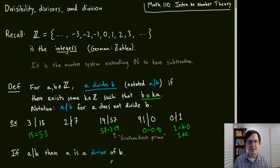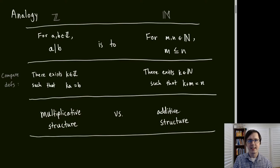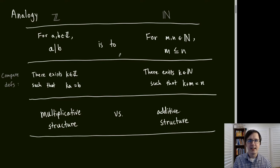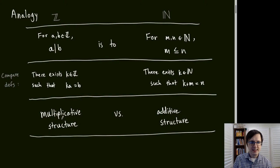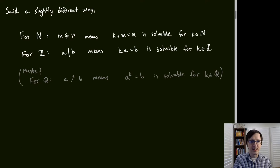Now let's look at an analogy between the integers and the natural numbers — specifically between divisibility and the less-than-or-equal-to relation. A divides B if there exists an integer K such that KA = B. For natural numbers, M ≤ N if there exists K such that K + M = N. So less-than-or-equal-to is to addition as divisibility is to multiplication — one examines additive structure, the other multiplicative structure.